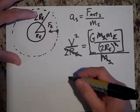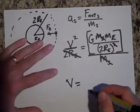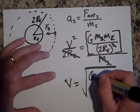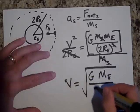So the speed that it's going to need to go is going to equal the square root of capital G, mass of the Earth, all over 2RE.